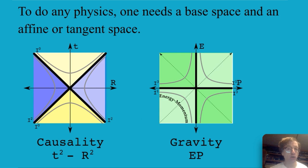To do any physics like at all one needs a base space and an affine or tangent space. So the base space we're going to use is space-time that tells you exactly when and where something is. Now that's a necessary thing to know but it's not enough to say what's going to happen next. To know what happens next you need a space that can tell you about the changes that are going on and one of the most direct ones to use is energy momentum.